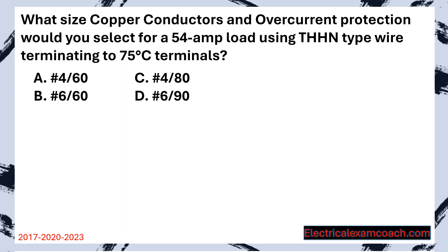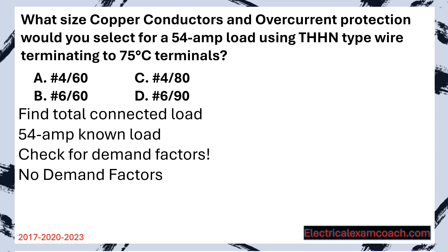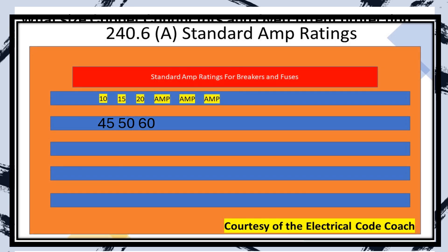What size copper conductors and overcurrent protection would you select for a 54 amp load using THHN type wire terminating to 75 degrees C terminals? Step one: find our total connected load. In this case it's 54 amps, but we must check for demand factors. They've not mentioned a specific piece of equipment or that it's going to run for three or more hours, so there are no demand factors. Now we size our overcurrent protective device first — we head to table 240.6A for a 54 amp load and choose the next standard size up, which is a 60.